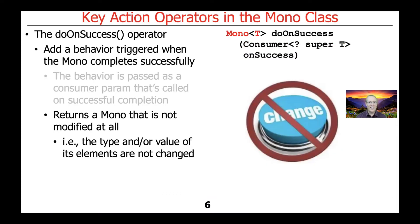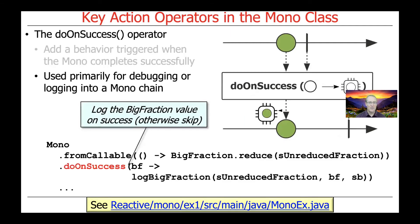What happens with doOnSuccess is that it doesn't change the mono that's going to be returned. Instead, it's only going to have a side effect. So the type and the value of the mono are not affected in any way, shape, or form when the doOnSuccess method is called.